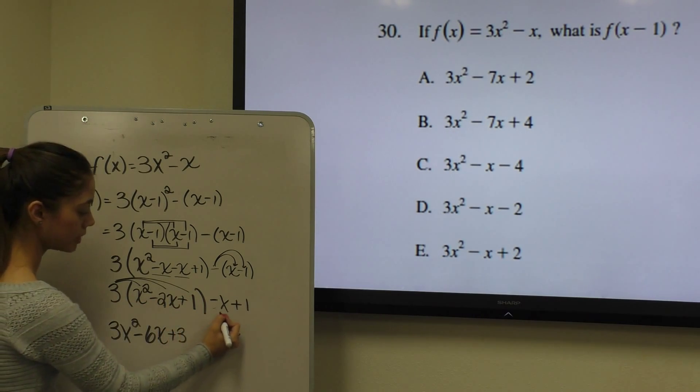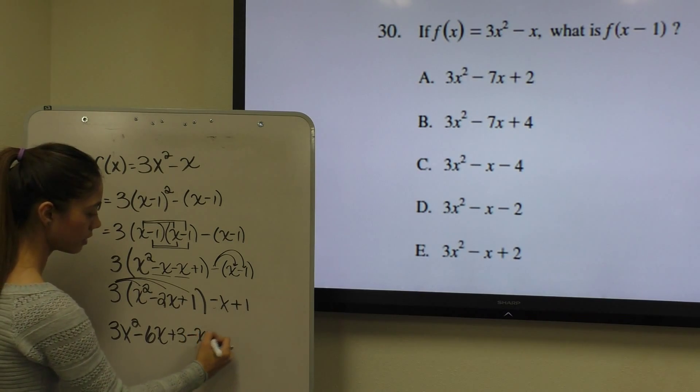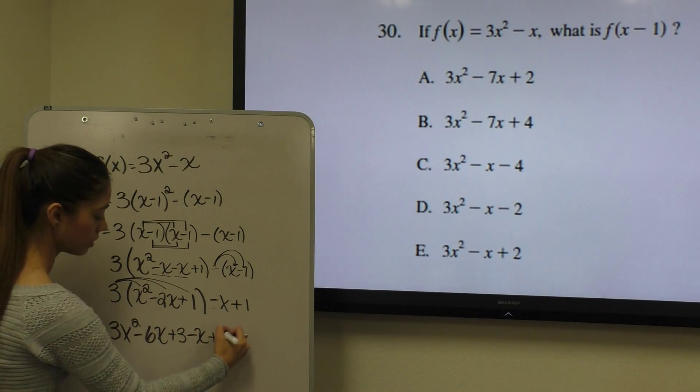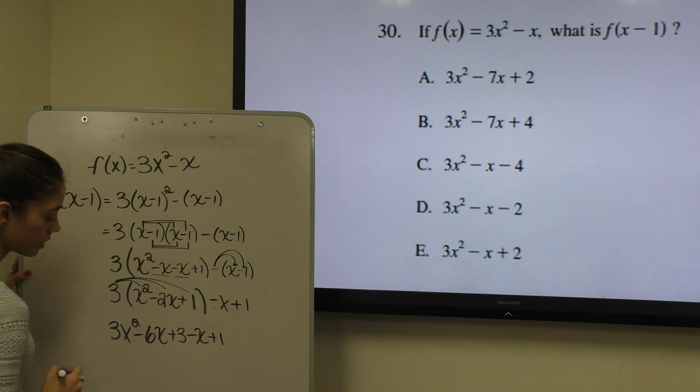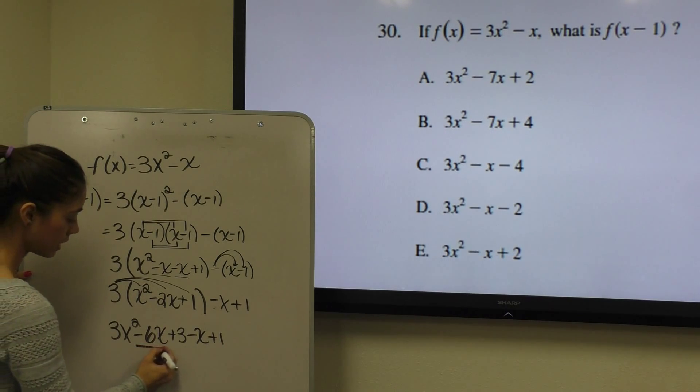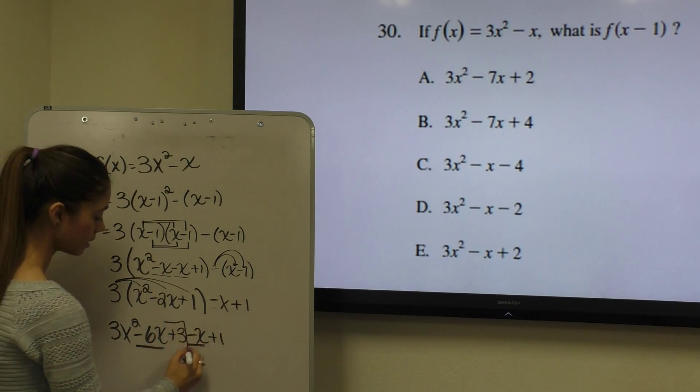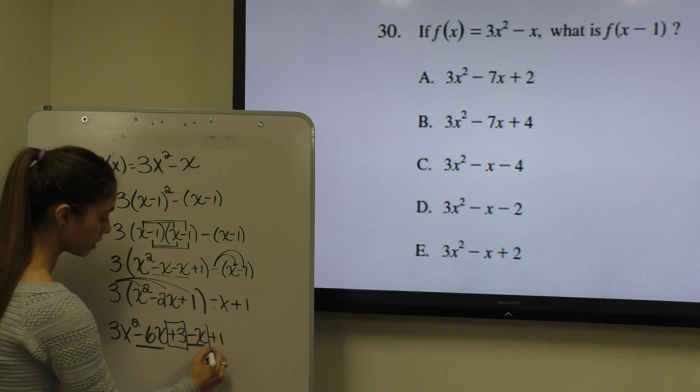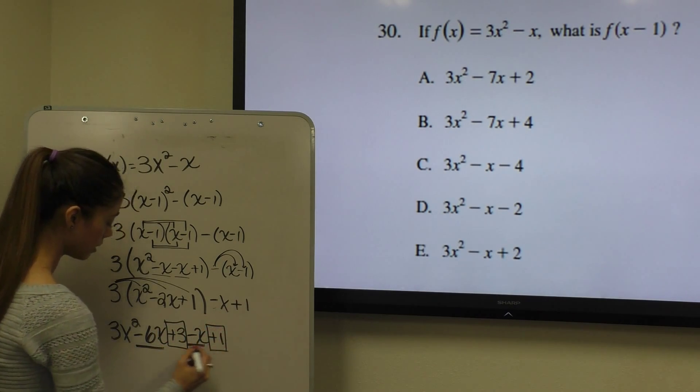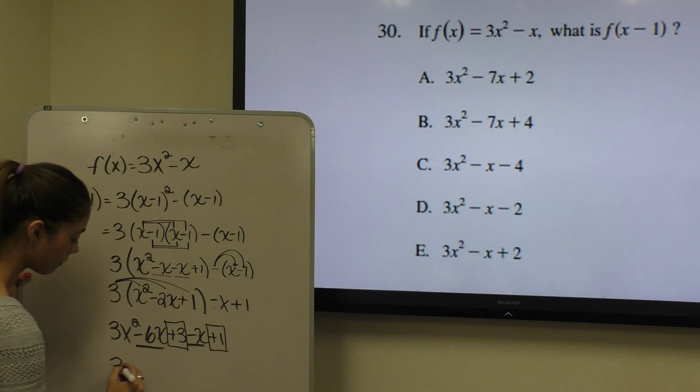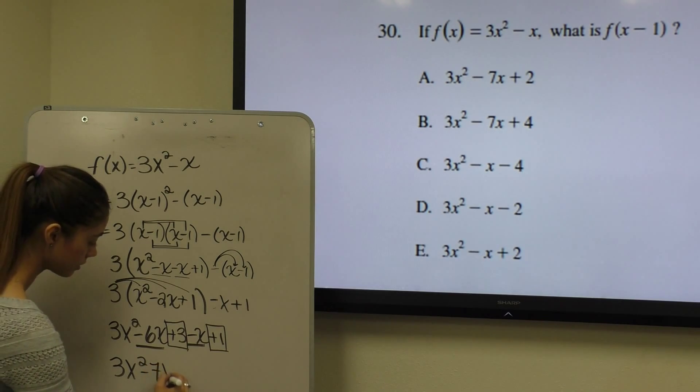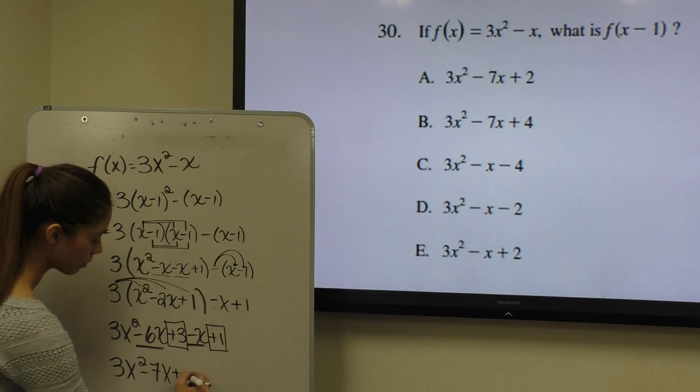And then we bring down our negative x and our positive 1. And then finally we can combine like terms, negative 6x and negative x can combine. And positive 3 and positive 1 can combine. To give us a final answer of 3x squared minus 7x plus 4.